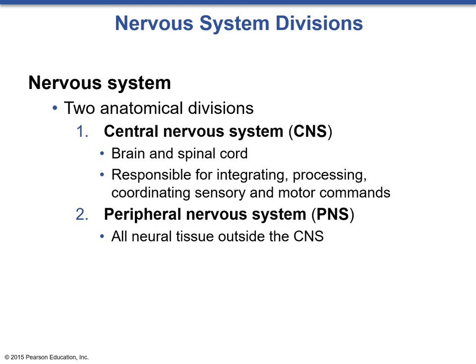This is Lecture 20 for Biology 177 on Introduction to the Nervous System. The nervous system is the central processing unit of the body. It processes sensory input and determines motor and visceral output.